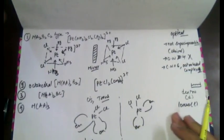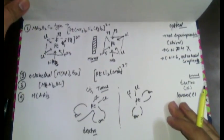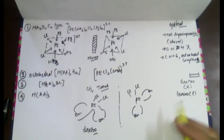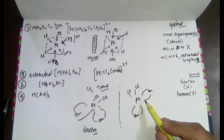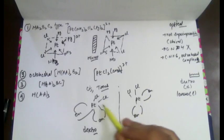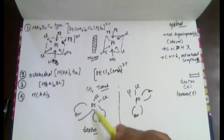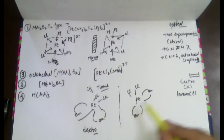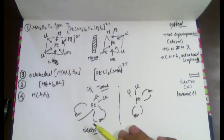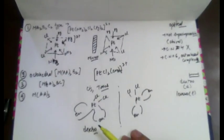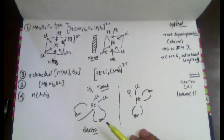When we superimpose these two compounds, they will not be superimposable, so they are optically active. If this compound rotates polarized light clockwise, then its mirror image will rotate it anti-clockwise. Since they rotate light, we call them optically active.